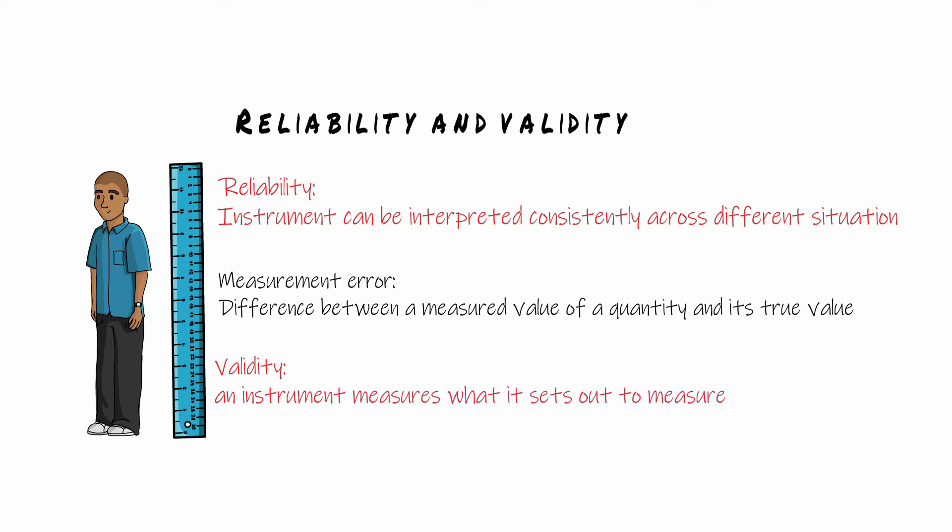So let's take the ruler for example. We want to use it to measure a person's height. But instead of measuring the height, let's say it actually measures the person's weight. In that case, the instrument isn't valid because it's not measuring what it's supposed to measure.